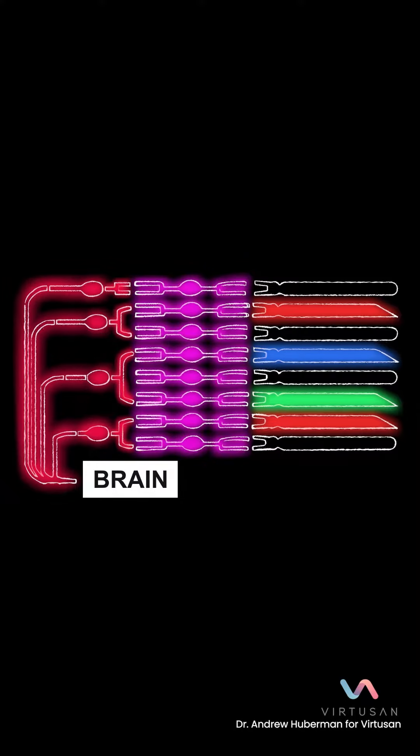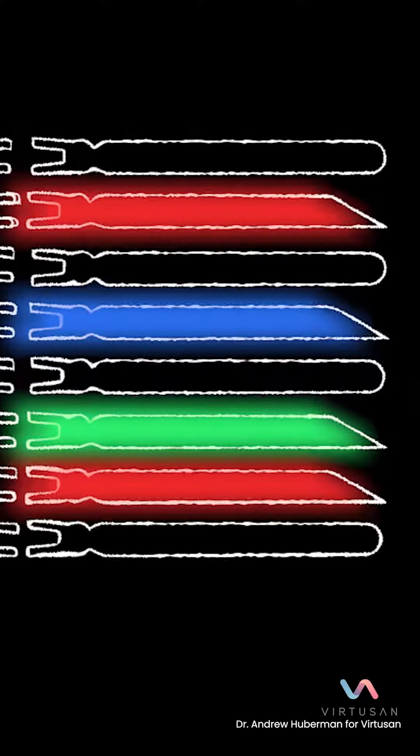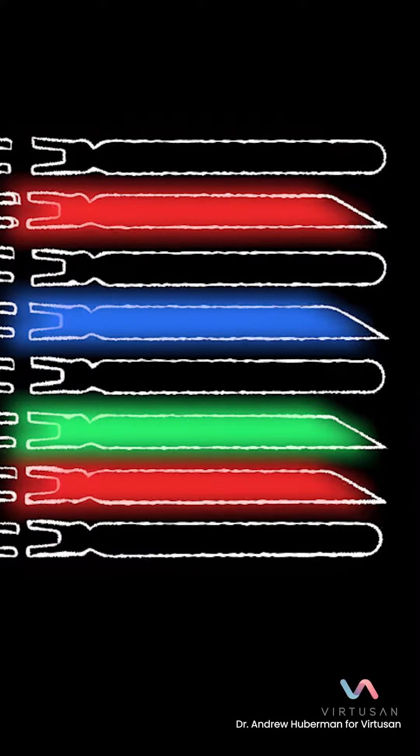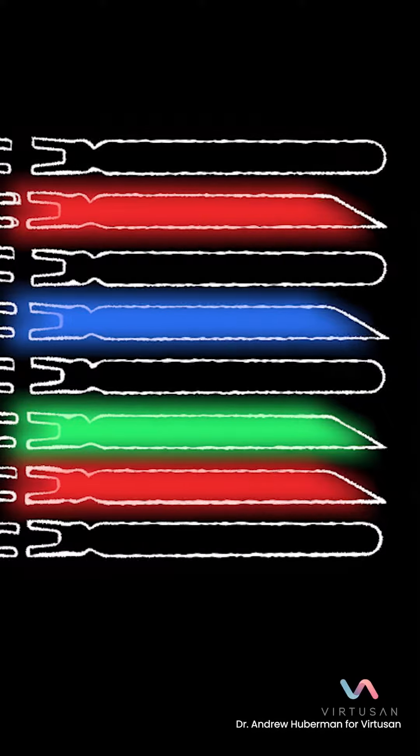Now, these cells, the rods and cones, are very important, and even more important to know is that they are the most metabolically active cells in your entire body. They require immense amounts of energy, or ATP.